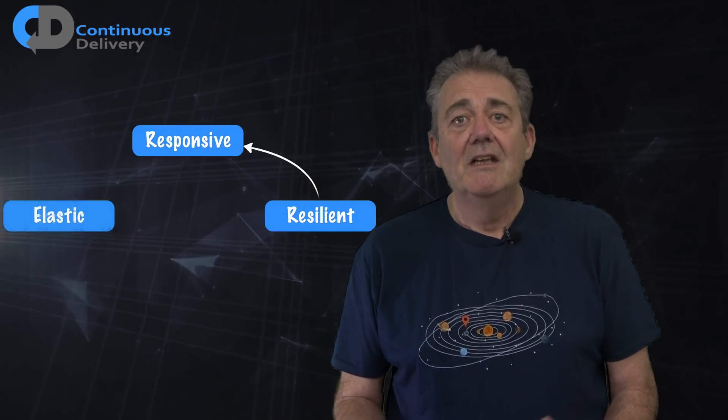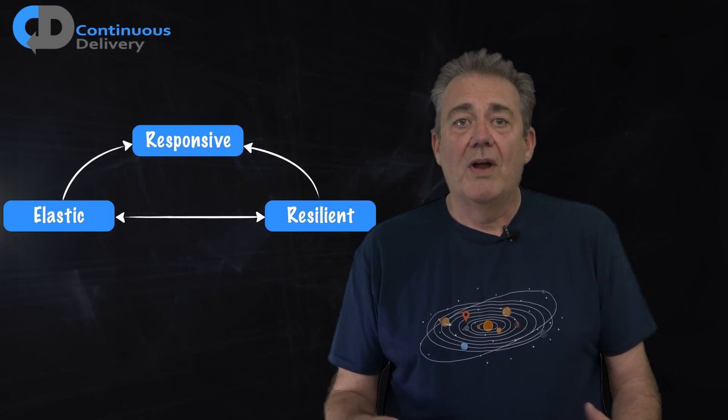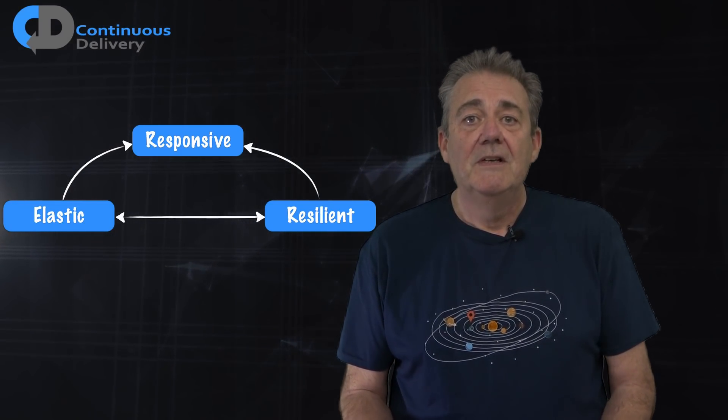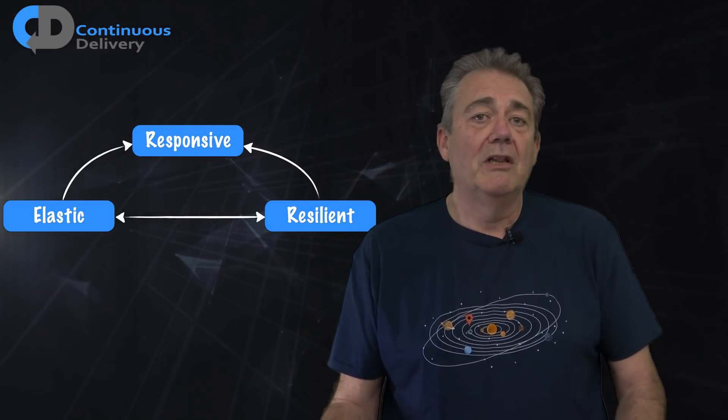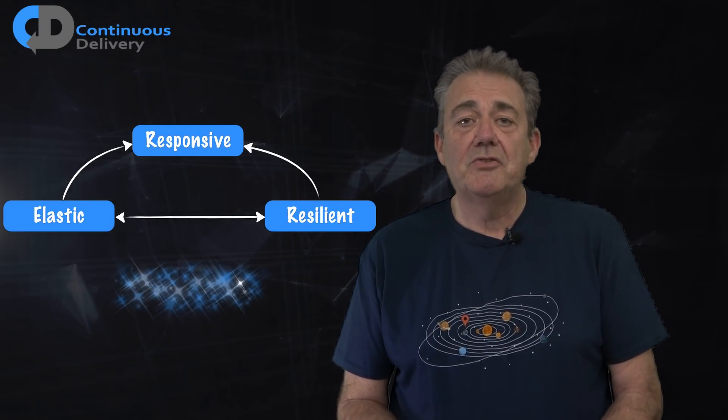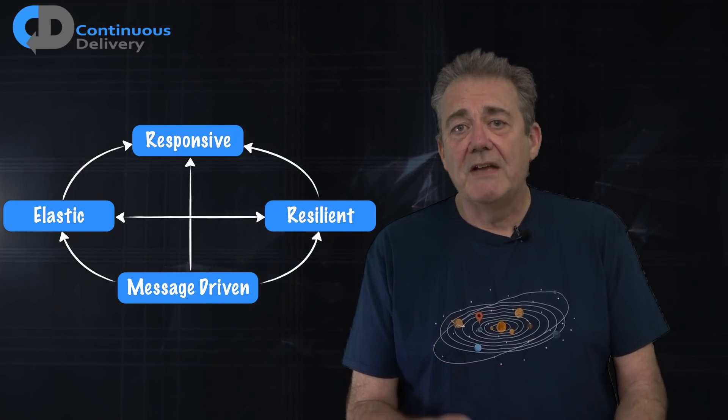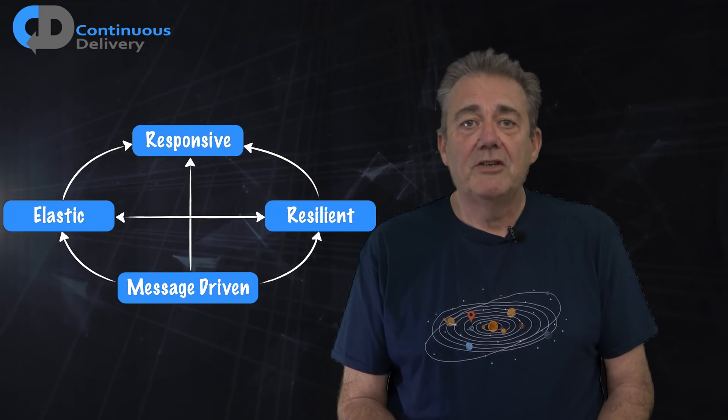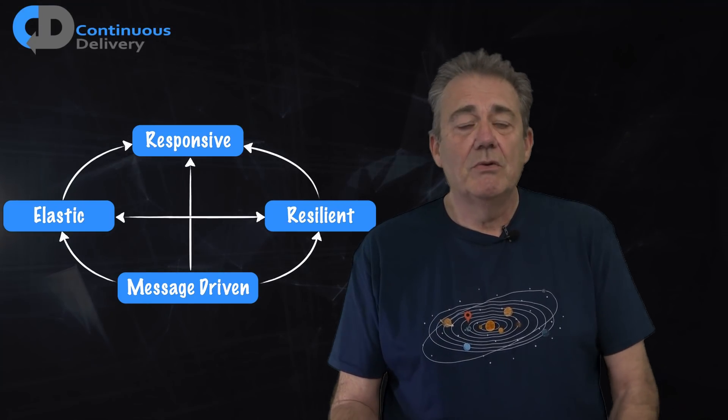Reactive systems are also elastic, meaning that they remain responsive under varying workload too. They respond to change in the input rate by increasing or decreasing the resources that service that input. This ability is delivered through decentralized architecture, no contention points, and ensuring that there are no central bottlenecks anywhere in the system. The core idea though that underpins everything else is that they are message driven. Reactive systems are based on asynchronous message passing. This forms the foundation for all of these other properties.